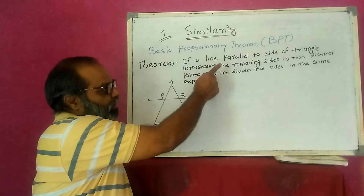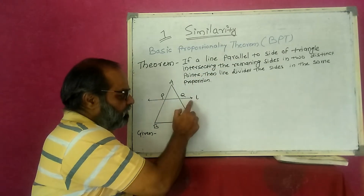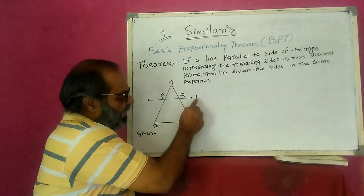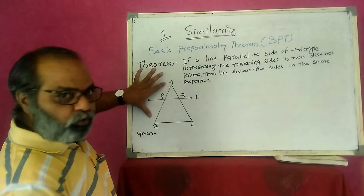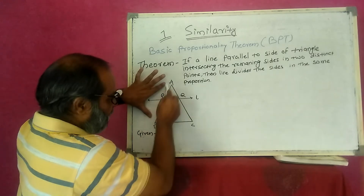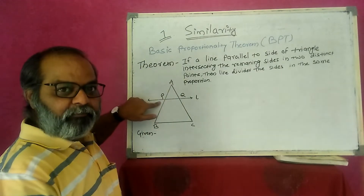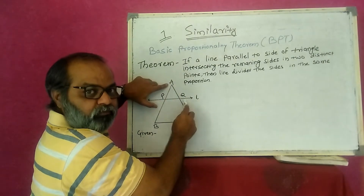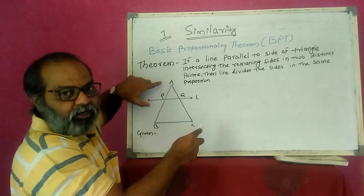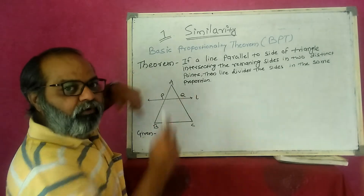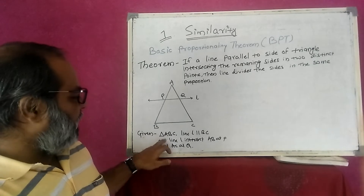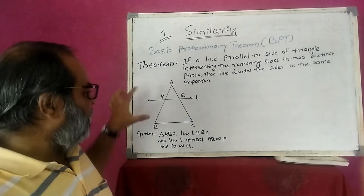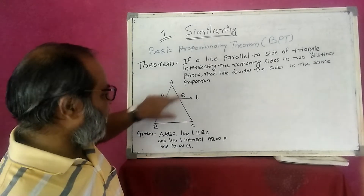Given that line L is parallel to side BC, line L intersects AB at point P and line L intersects AC at point Q. So this is what is given in the figure. Triangle ABC, line L is parallel to BC, line L intersects AB at point P and AC at point Q.